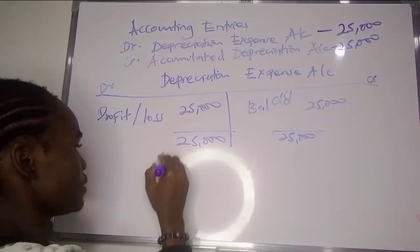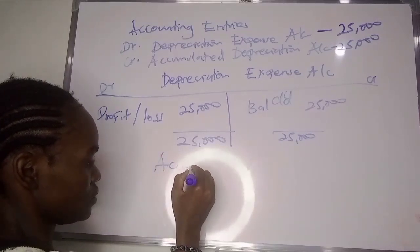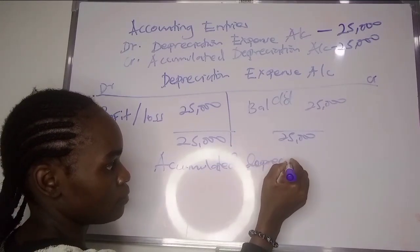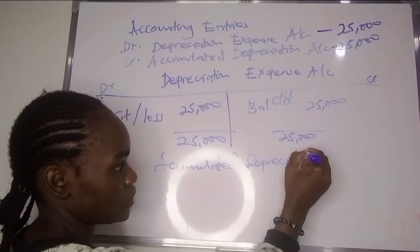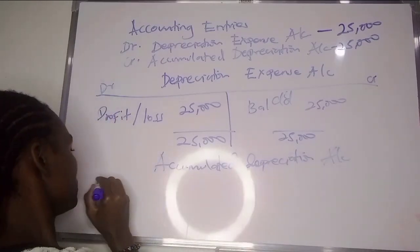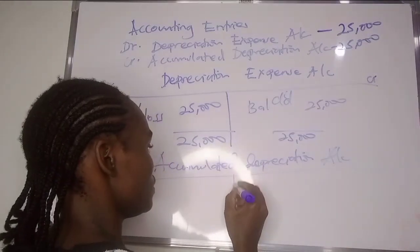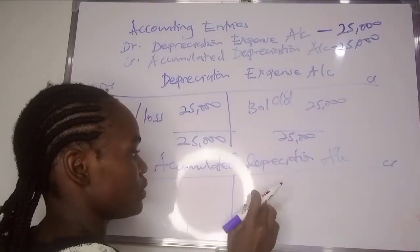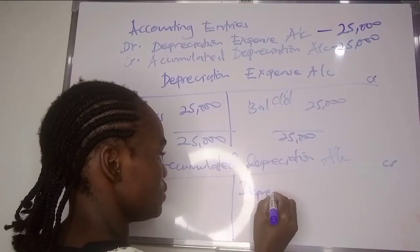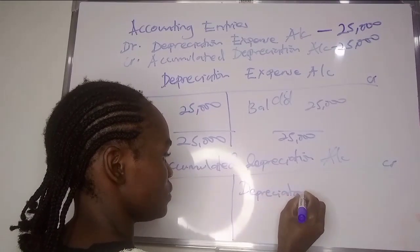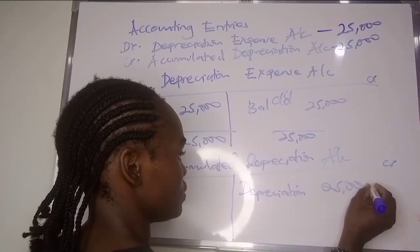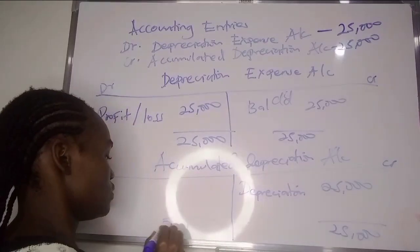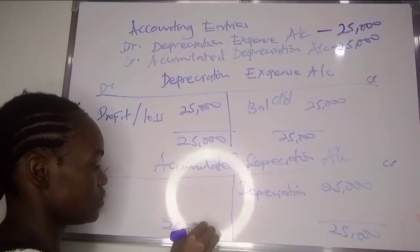Then the accumulated depreciation account — we said we credit this one, so on the credit side we write depreciation $25,000.